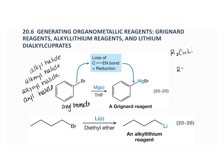Notice that the aryl and alkyl halide undergoes reduction in both of these reactions. The carbon's bond to an electronegative atom — bromine in this case — is lost, and its place is taken by a metal atom whose electronegativity is lower than that of carbon. This is a characteristic of a reduction reaction.